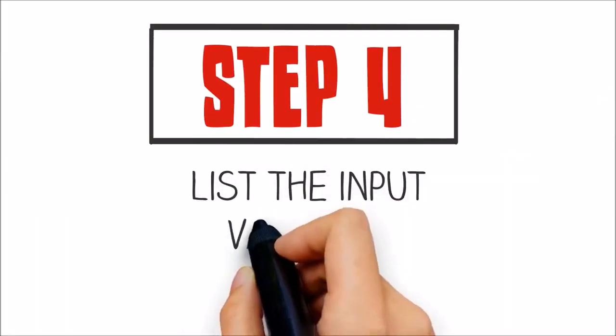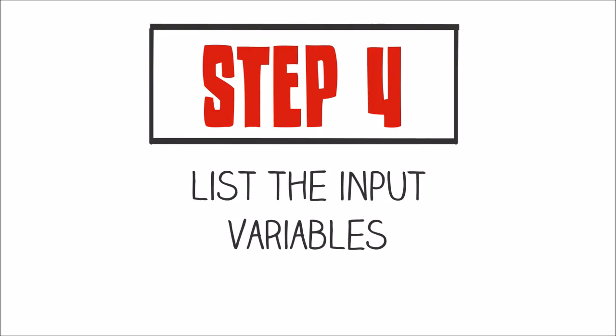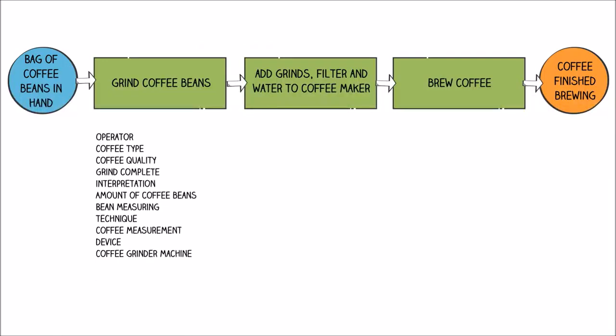Step 4: List the input variables. Again, just like with your SIPOC, you now want to identify the inputs to each step. Just like the outputs, this step is much more detailed than your SIPOC, and you'll need to think about all the inputs that go into each step.